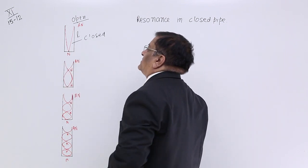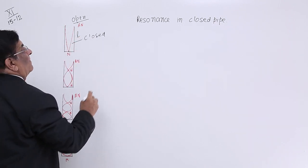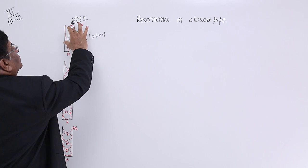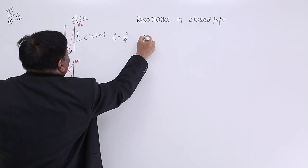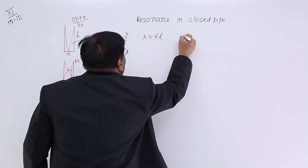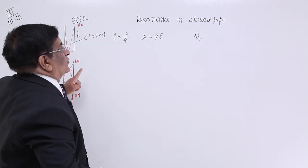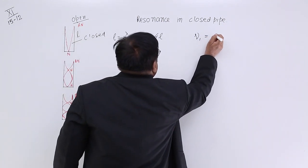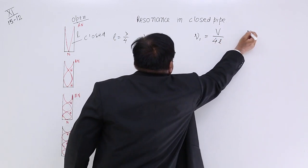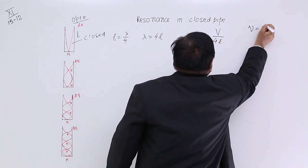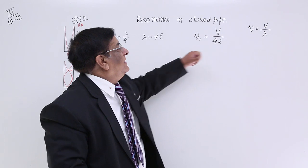That frequency of the sound we can calculate how? First relation with L and lambda. Here we find this is equal to 1 fourth of lambda. So in this case, L is equal to lambda by 4. So lambda is equal to 4L. So frequency for the first loud sound for the first tone is equal to V upon lambda and we write it V upon 4L because we know the formula for frequency that is V upon lambda. V is velocity of the sound in the air and L is the length of this pipe.